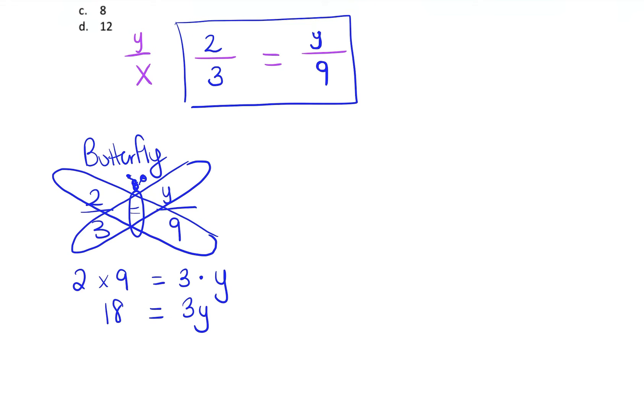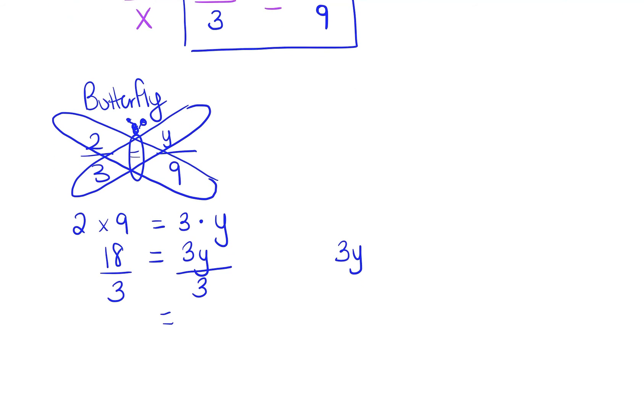So remember in our last problem when I told you when there's a number like 3 and a letter like y and they're together, they're being multiplied. So the opposite of multiplication is division. If I want to get rid of this 3 and get the y by itself, I need to divide both sides by 3. And so 18 divided by 3 is 6. And then those 3s cancel each other out. And I'm left with y. So y is equal to 6.